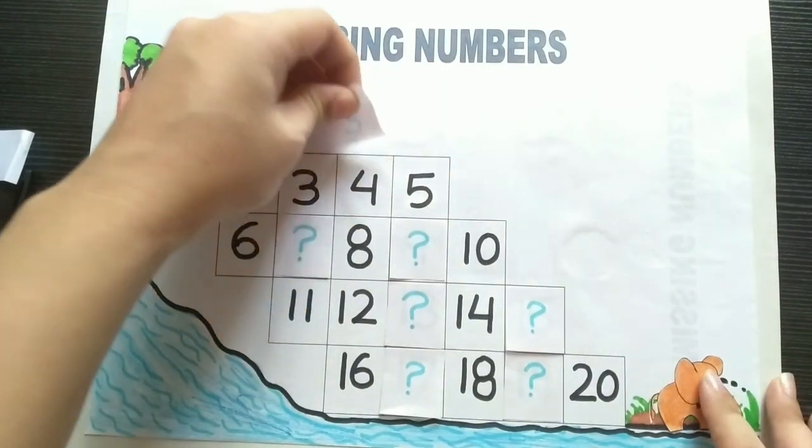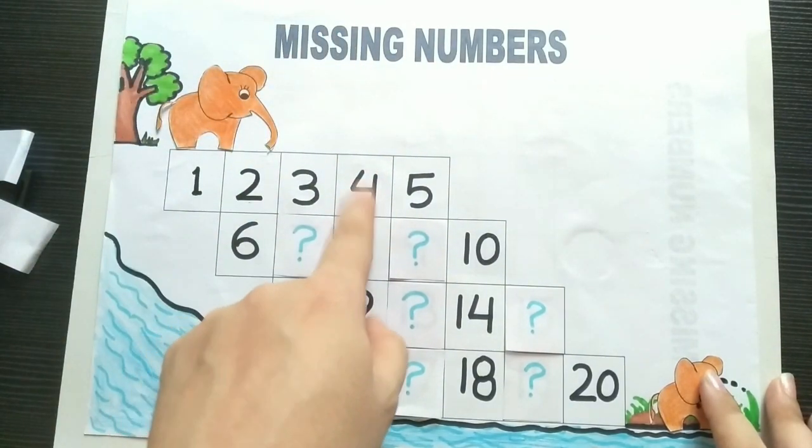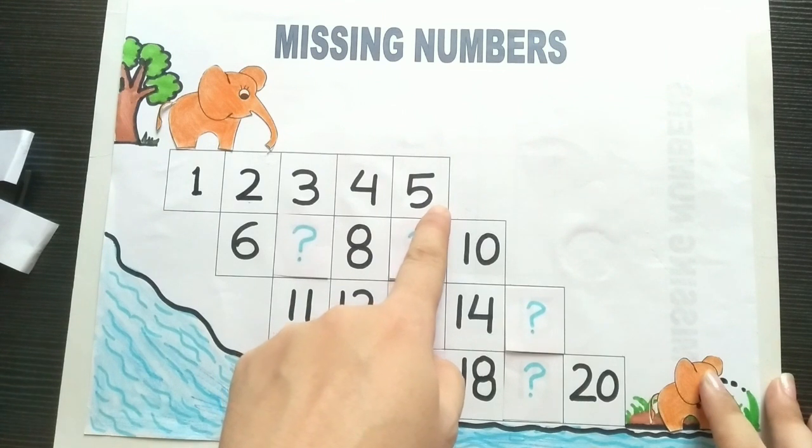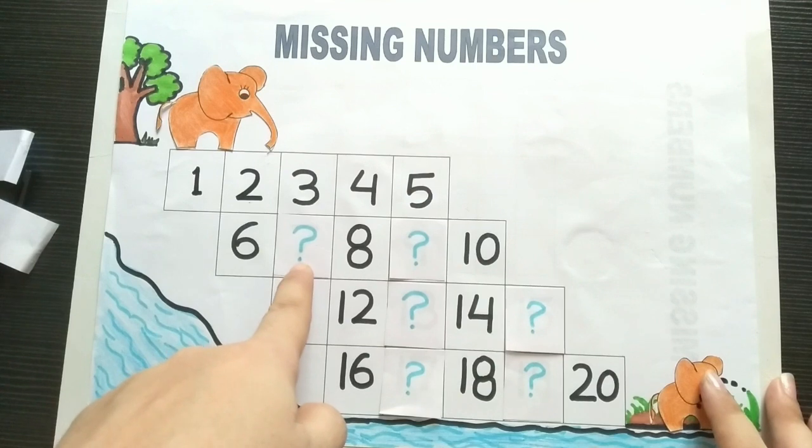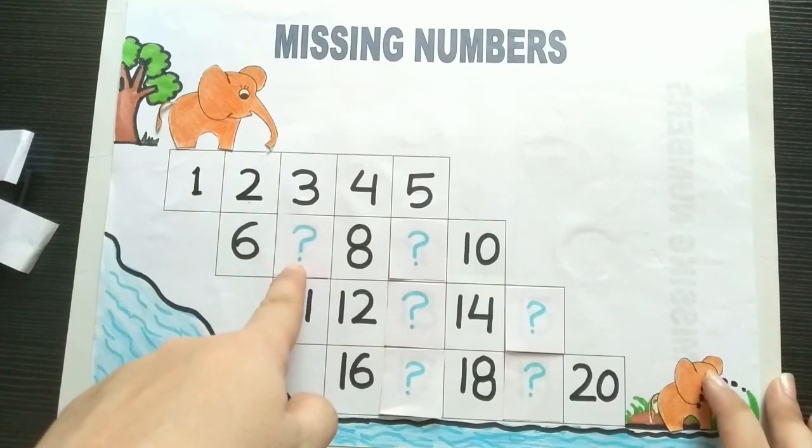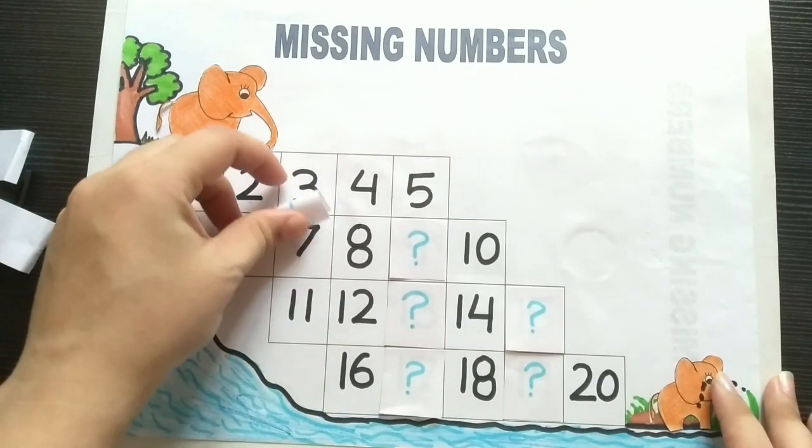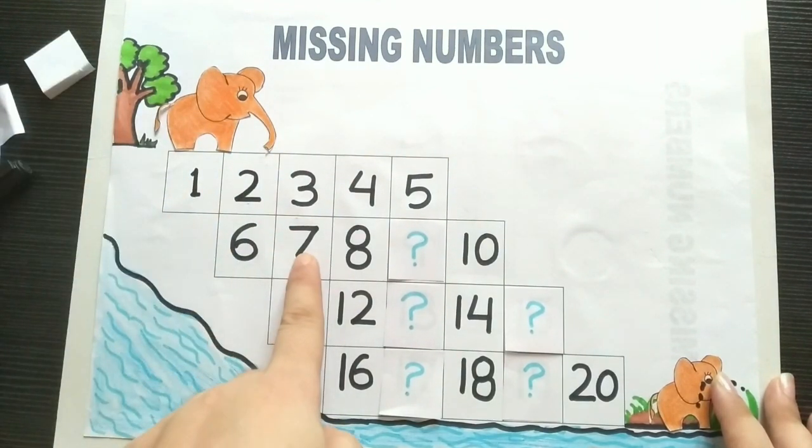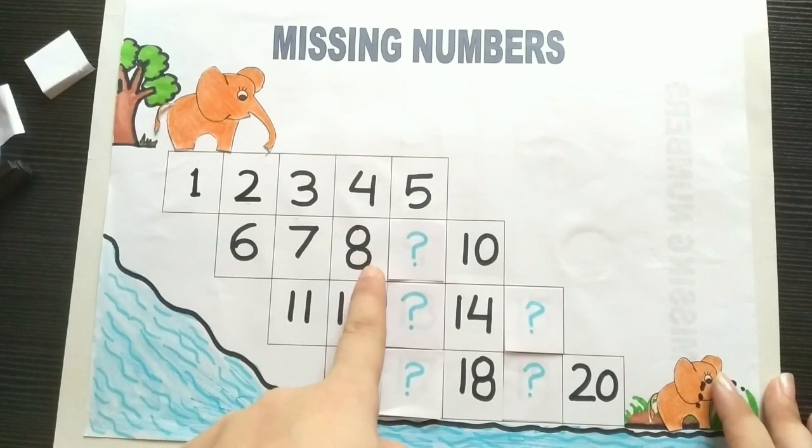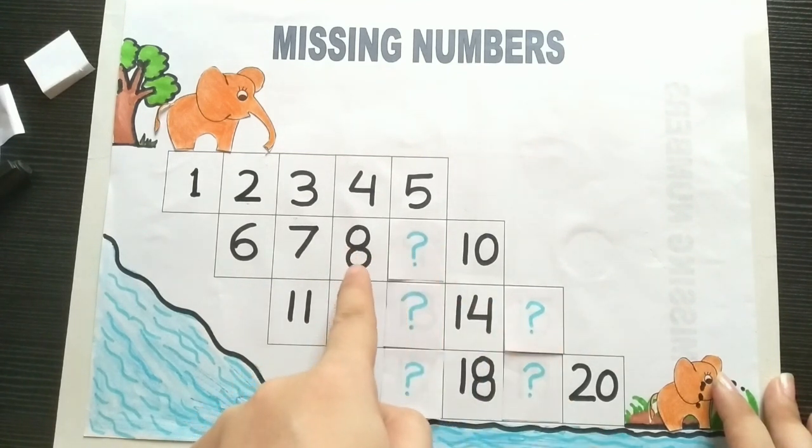Four, five, after five is six. After six is, what is the missing number here? What comes after six? After six is number seven. Seven, eight. Another missing number, so what is the missing number here? After eight is number nine.